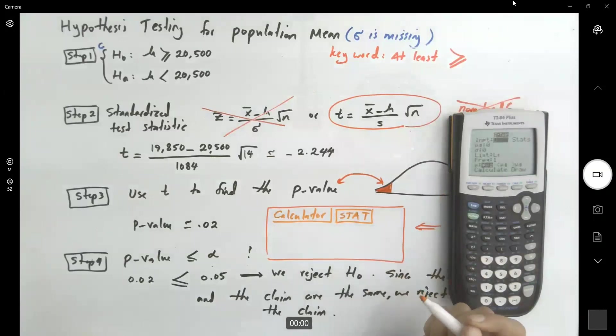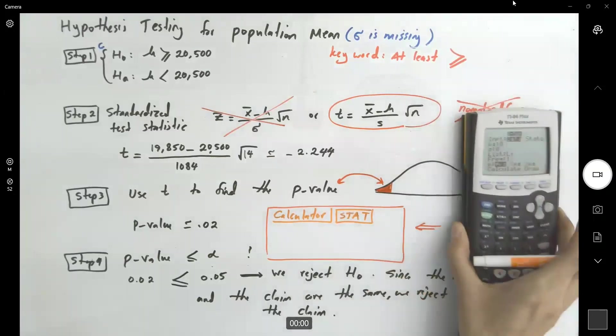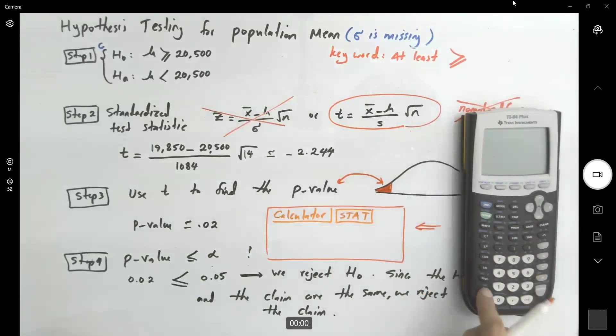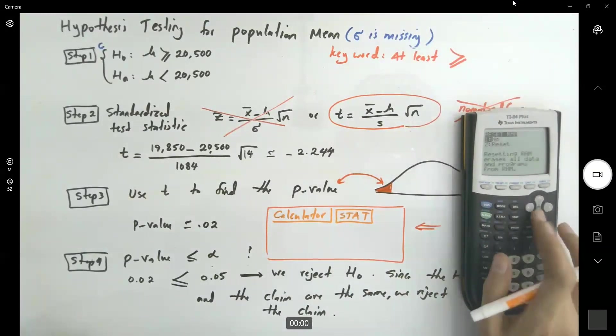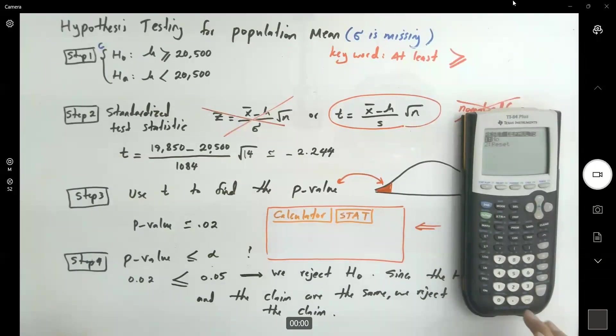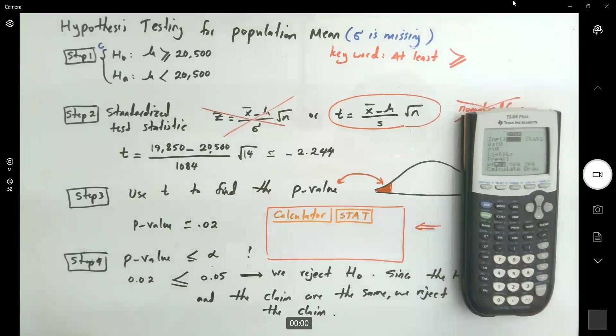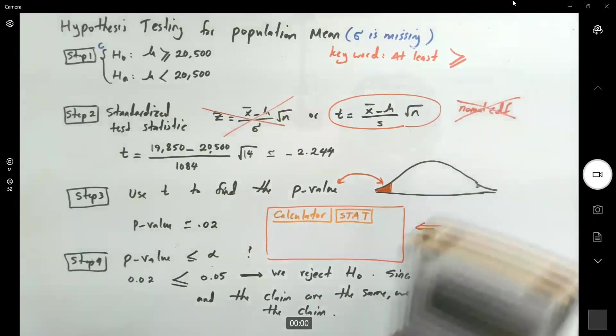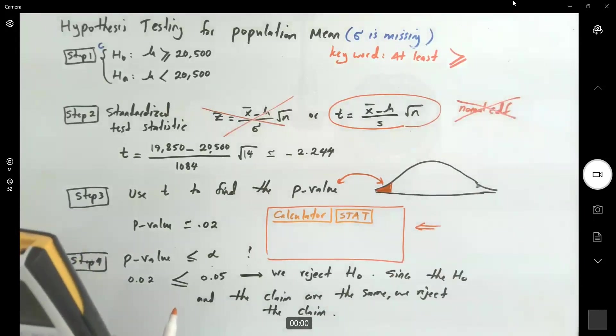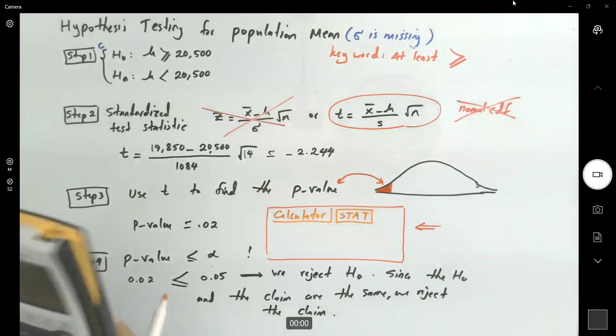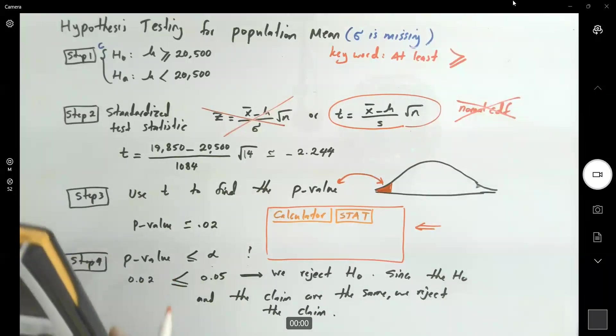Let me just erase the whole thing. I think my calculator needs to be reset. Second plus. Now let me go to reset. All RAM. Reset. And second plus. Reset the defaults. Perfect. So go to stat. Go to tests. We went to the Z test instead of the T test. Very good.